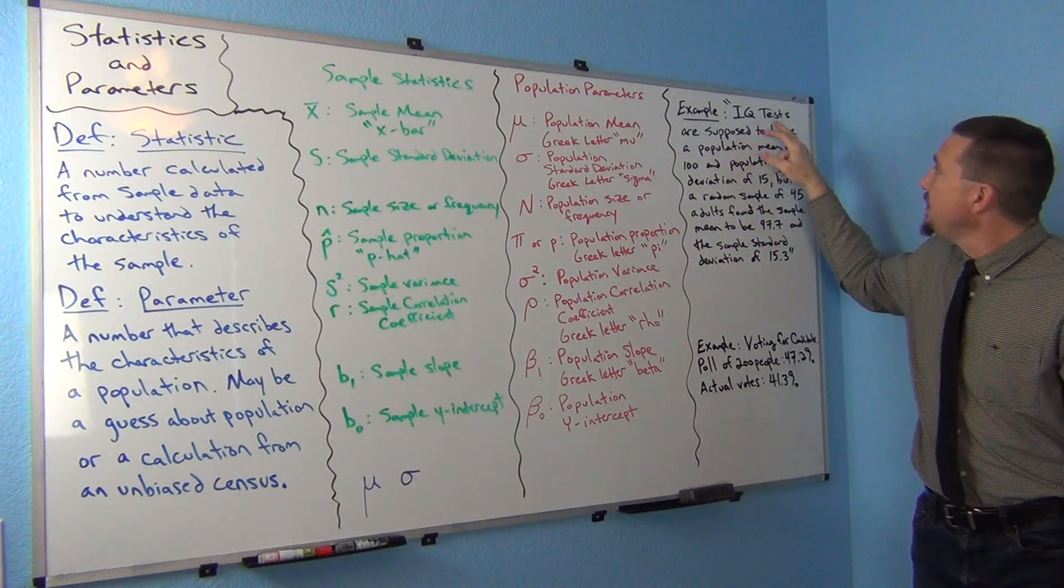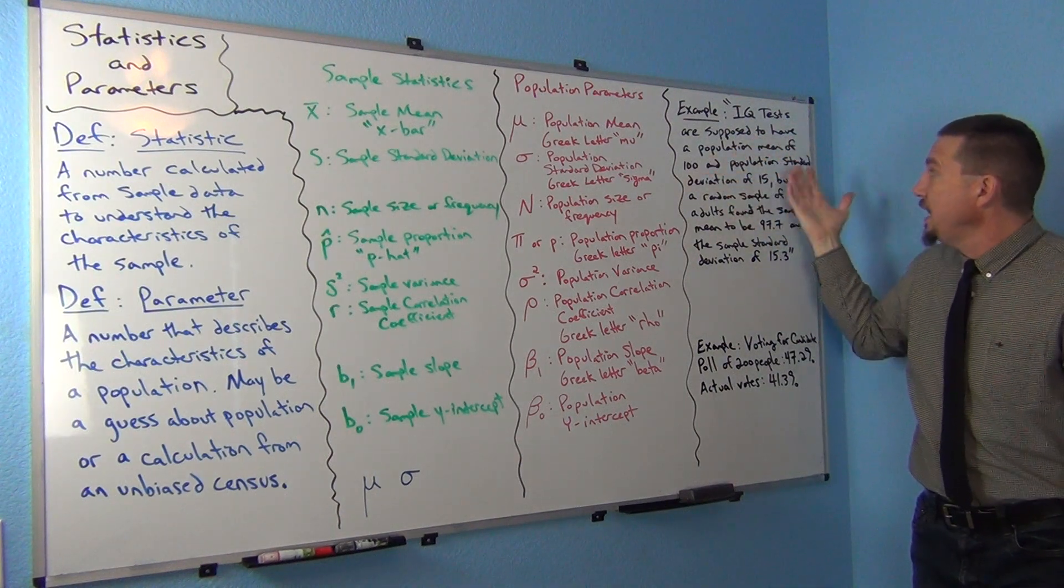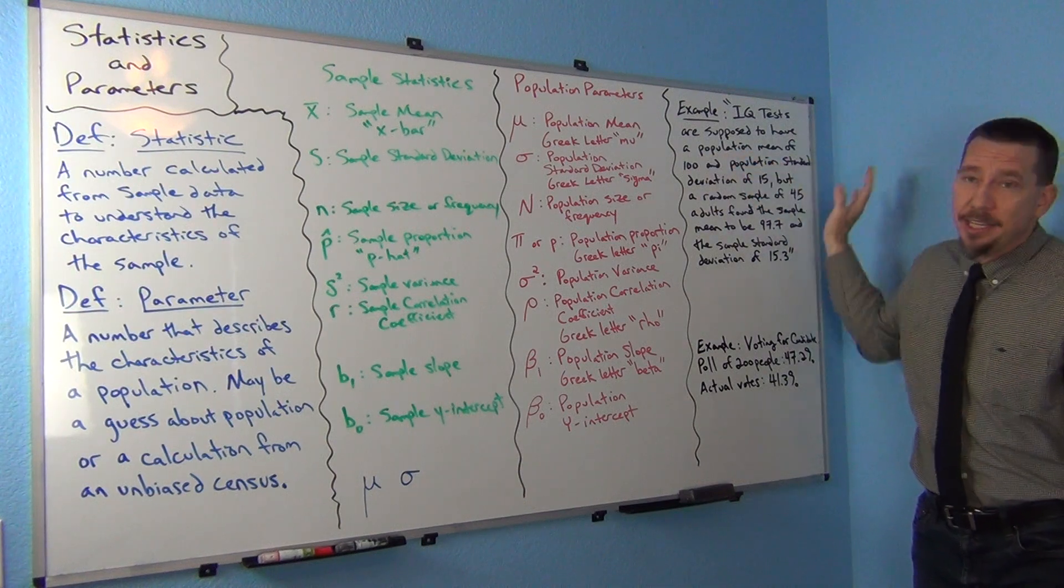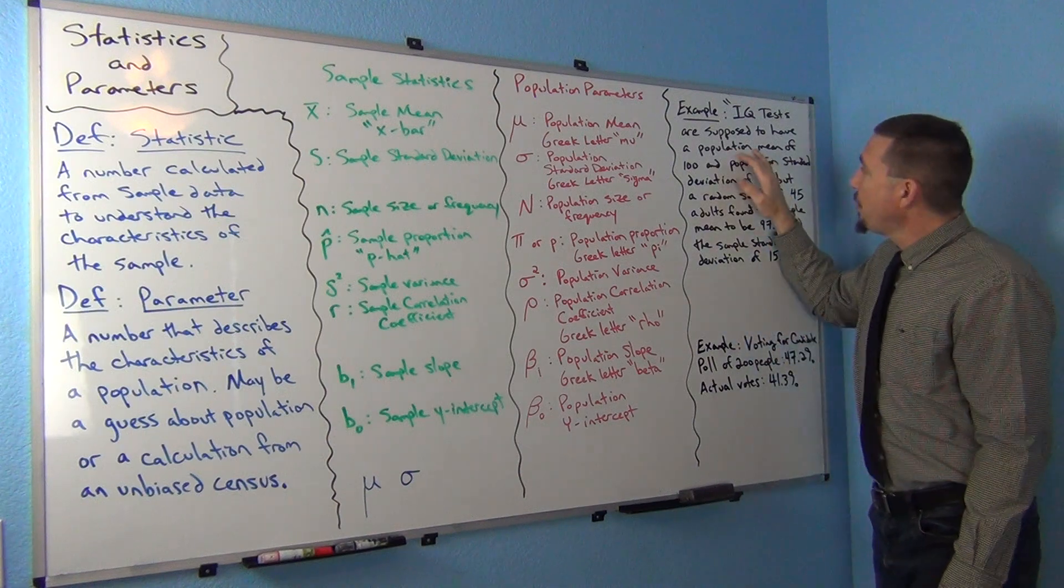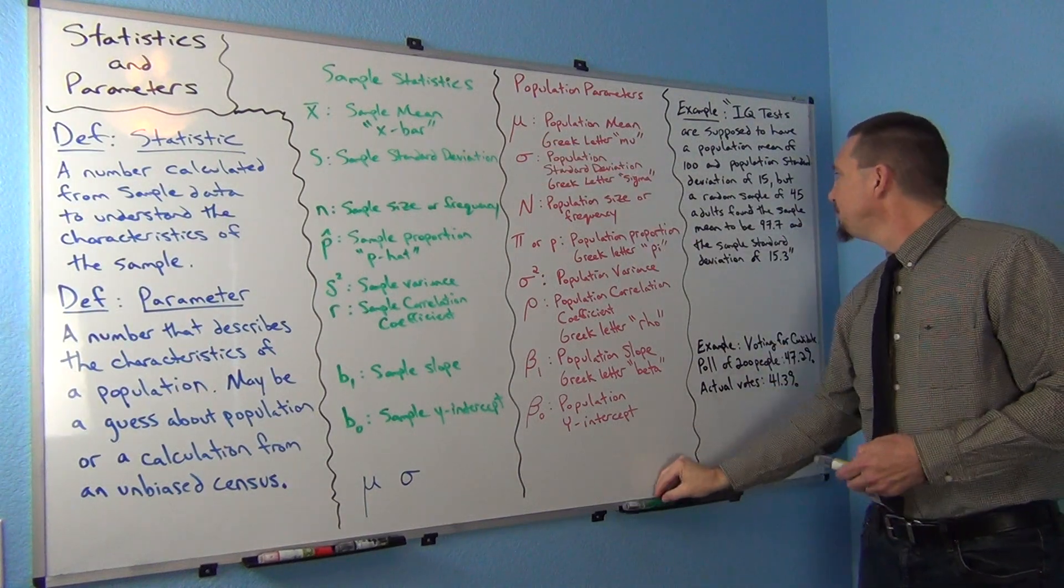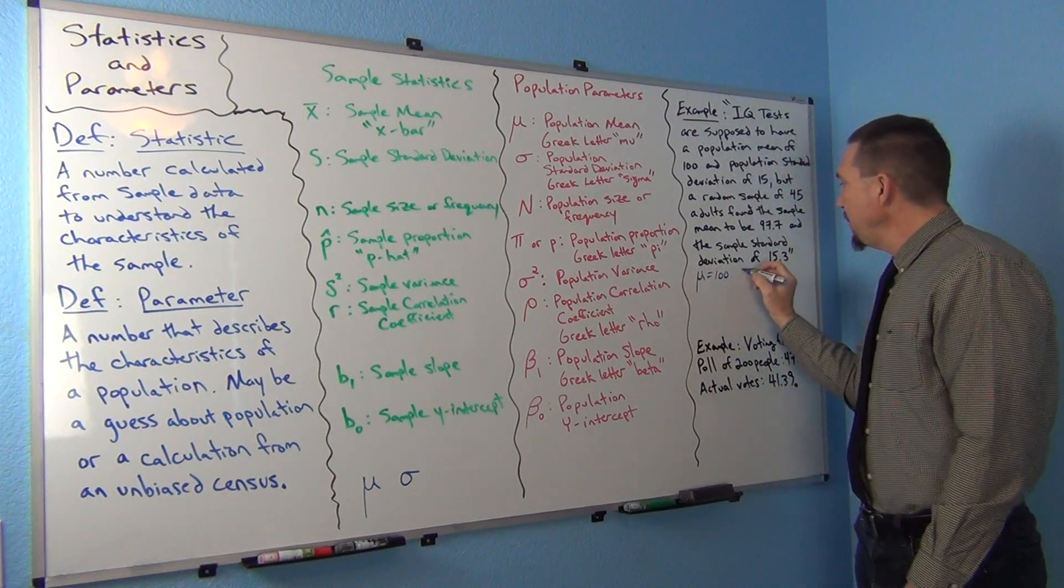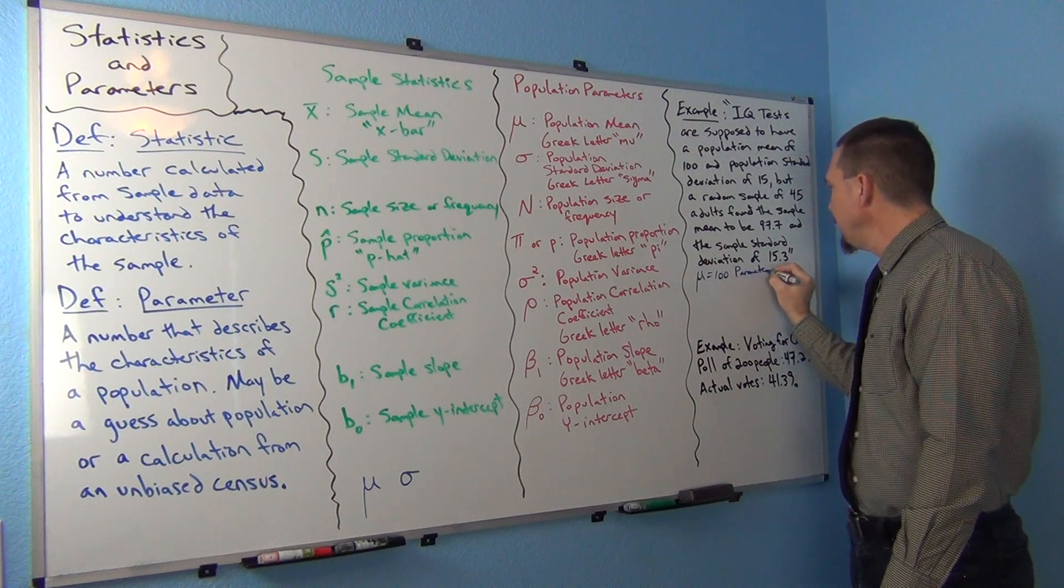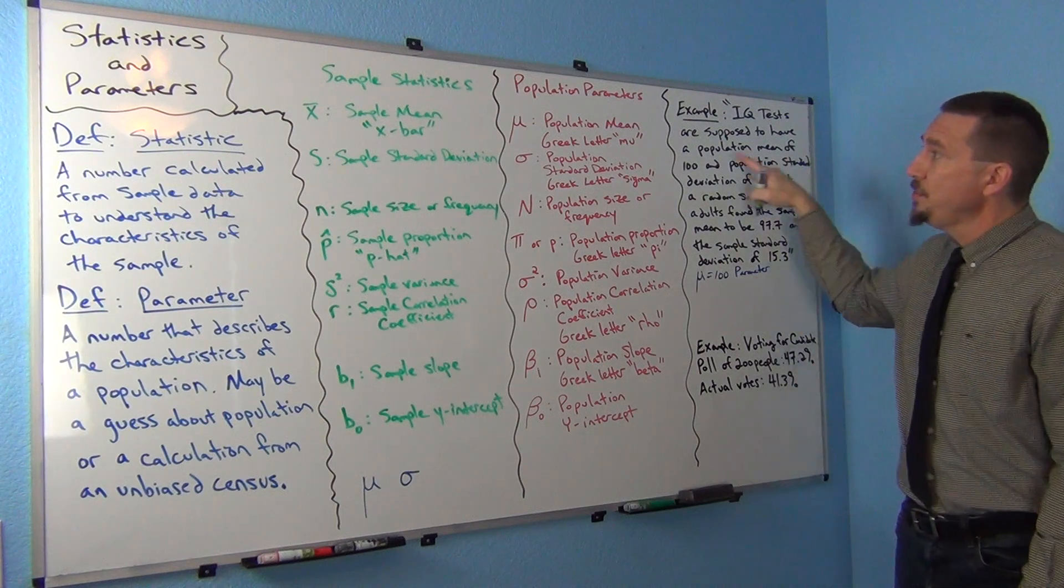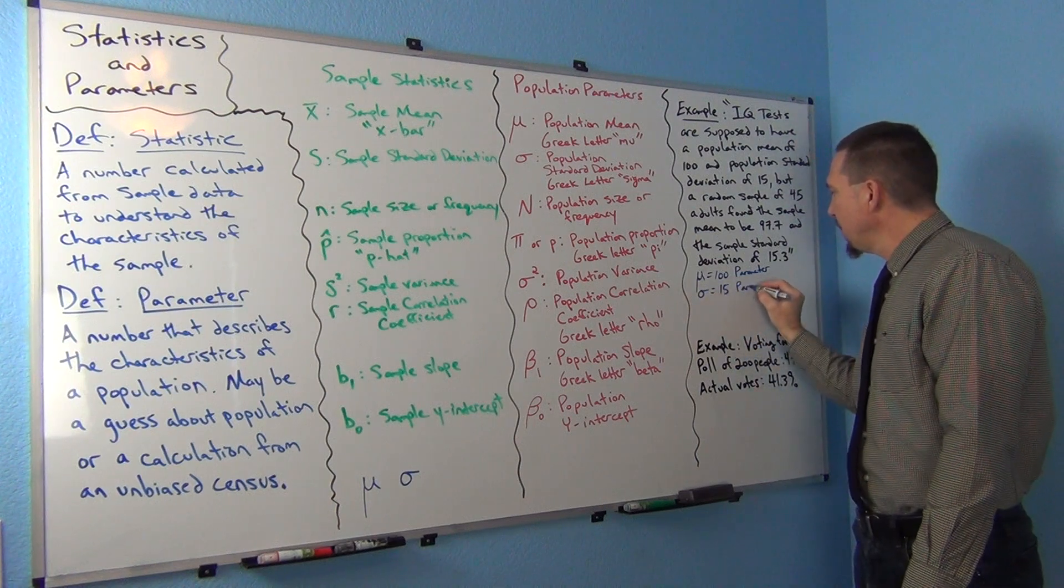Notice it said that the IQ tests are supposed to have a population mean of 100 and a population standard deviation of 15. They did say population here, right? So this is not a sample mean. This is a guess about everybody that's ever taken an IQ test. The population mean, that's the Greek letter mu. So if I was doing this in a computer program, I'd write mu equals 100. That would be a parameter since it was a guess about the population. The population standard deviation, we said, was the Greek letter sigma. So sigma is 15, and that's also a parameter.